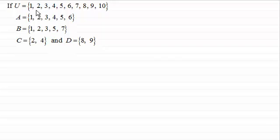I'm taking the universal set to be the integers from 1 to 10, and then I've got various subsets here, A, B, C and D.